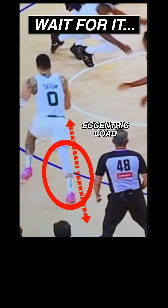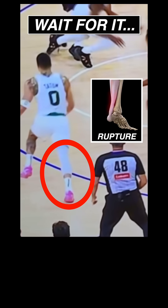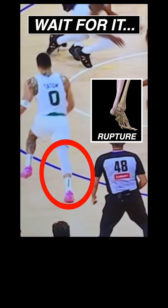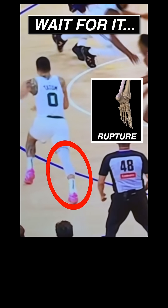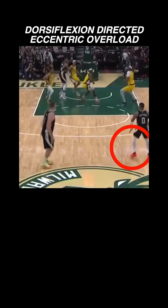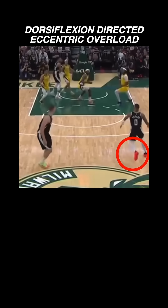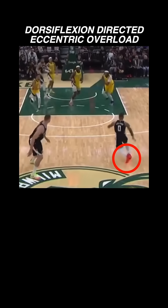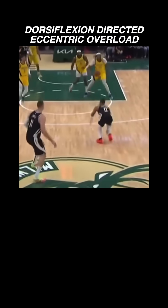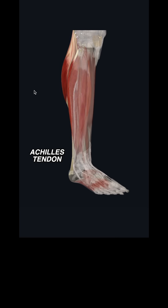his calf muscles are contracting while the Achilles tendon back here is being forcibly lengthened. This is called an eccentric contraction, which causes a very high tensile stress. If the force exceeds the tendon's tensile capacity, especially if that tendon has pre-existing degeneration — aka tendonitis — it ruptures. This is a near identical mechanism to Dame Lillard's injury, where he also was responding to a loose ball.